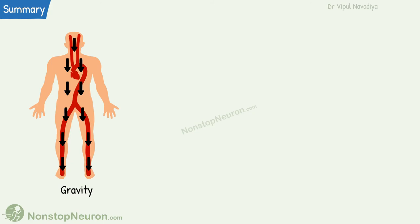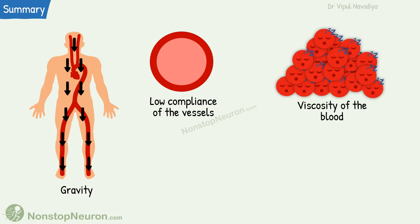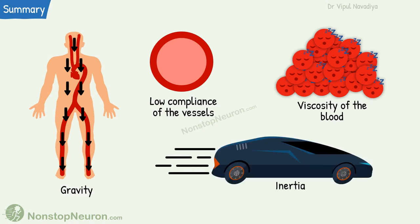Let's have a quick summary. Gravity causes hydrostatic pressure differences at different levels of the body when we are in an upright position. Low compliance of a vessel causes pressure to increase when there is an increase in blood volume. Viscosity of the blood increases pressure when there is flow. And finally, pressure can be generated from conversion of kinetic energy of the blood.